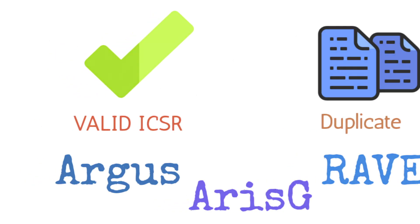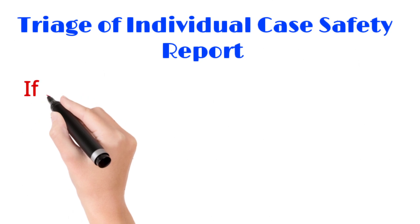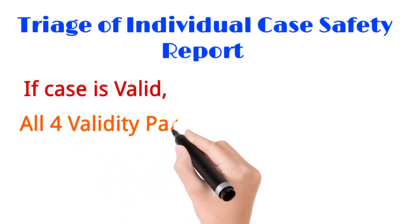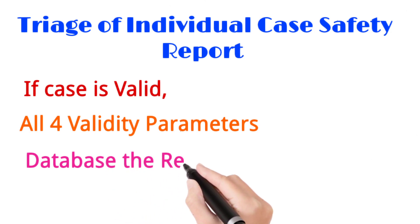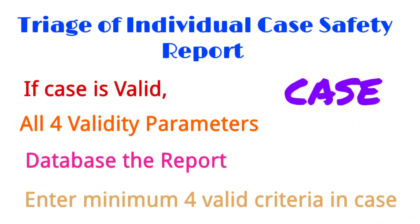The first step in case processing is triage of individual case safety reports. If the case is valid with all four validity parameters, then the triage associate can database the report in the safety database and enter all four valid criteria in the case. Once done, he or she can ask a query for any missing information and push the case ahead to the next workflow step.